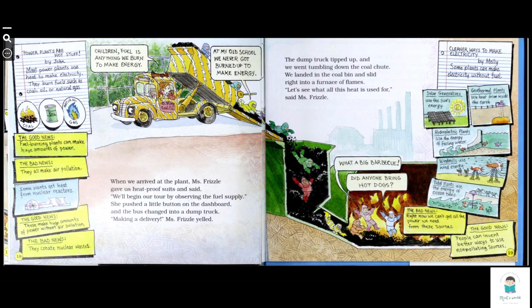The dump truck tipped up and we went tumbling down a coal chute. We landed in a coal bin and slid right into a furnace of flame. Let's see what all the heat is used for, said Miss Frizzle. What a barbecue! Did anyone bring hot dogs?